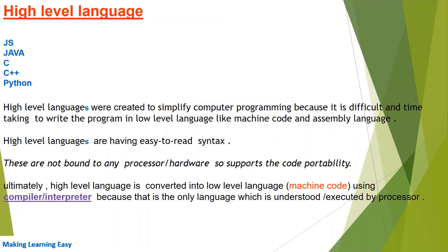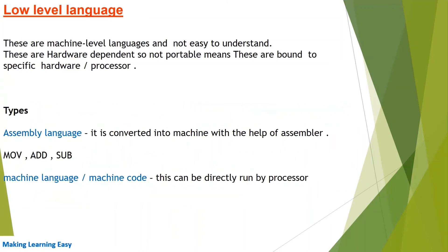These high level languages are easy to read because we use English words. Now, what is a low level language? These are languages that are very close to hardware, very close to the processor. These are also called machine language, but they are not easy to understand.